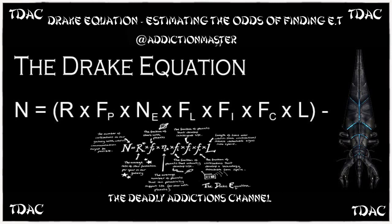I don't fully understand what the equation means — all these factors. I wouldn't know how to write it out if someone asked me to. It's actually N = R × fp × ne × fl × fi × fc × L, and I described it at the beginning, but I'm not a scientist. This is just fascinating stuff: how do we figure out the possibility of these things? Why haven't we seen aliens? I'll get into the Dark Forest Theory in other episodes.